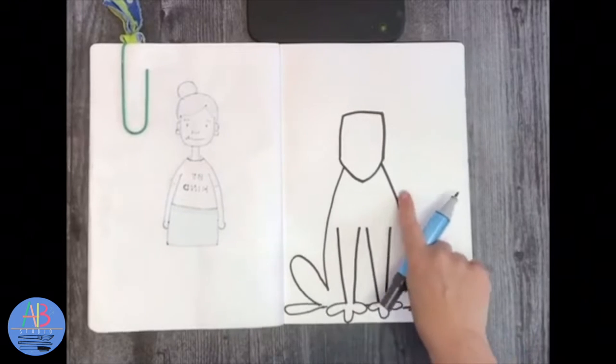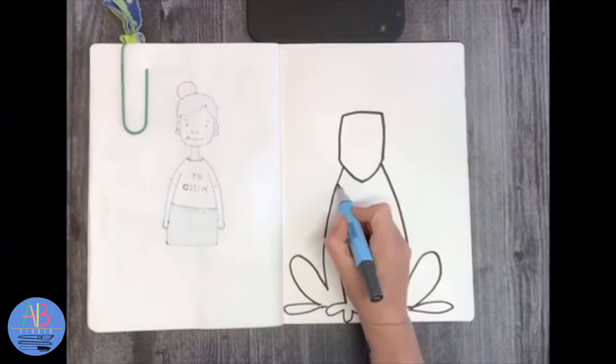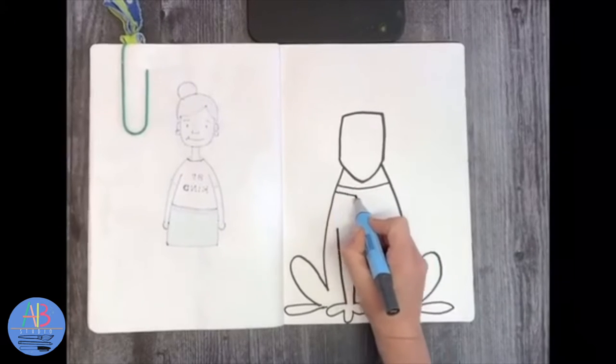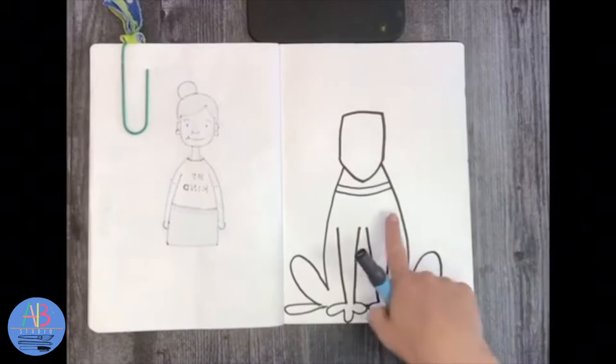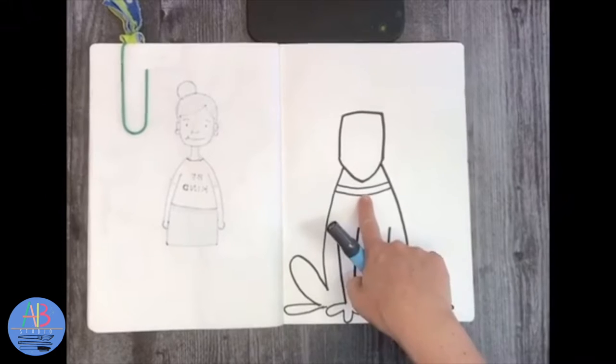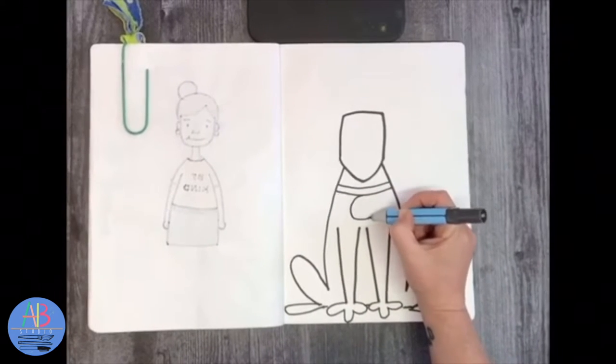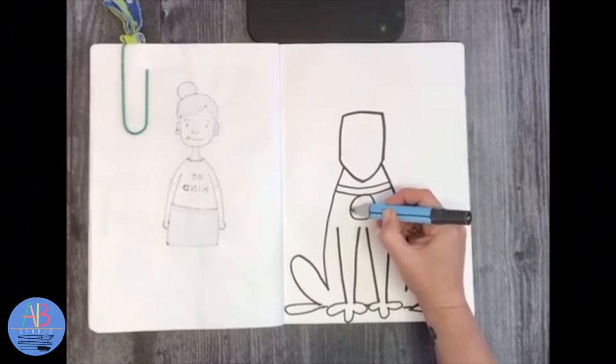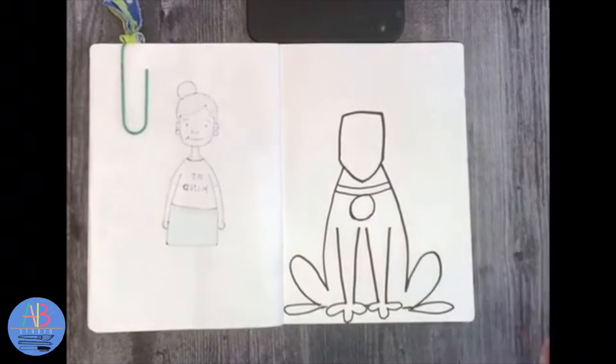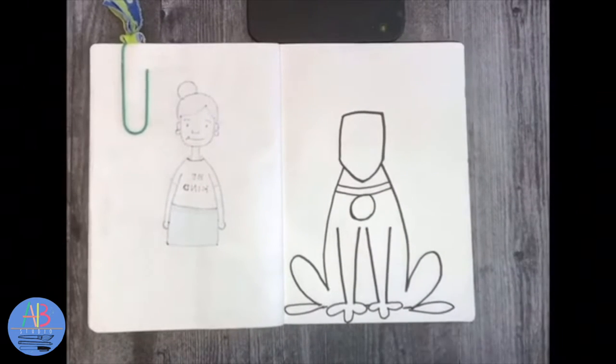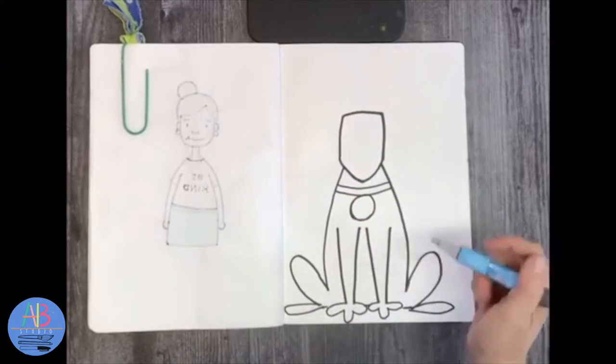And then we're going to add a collar. So two curved lines. And then under the collar, about right in the middle, we're going to add a dog tag. And I'm going to make it kind of big because I do want you to write, you're going to name your own dog. So leave it.